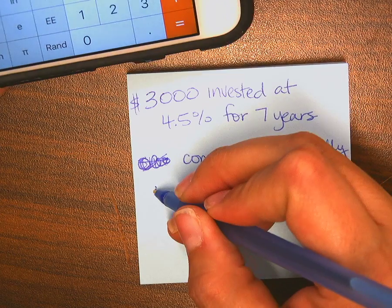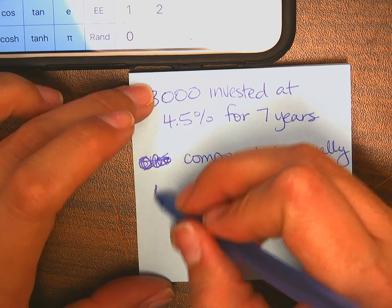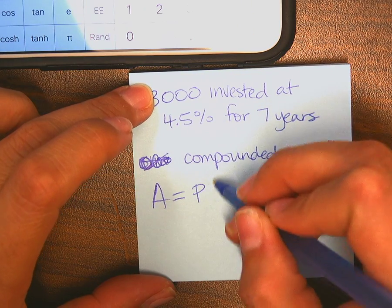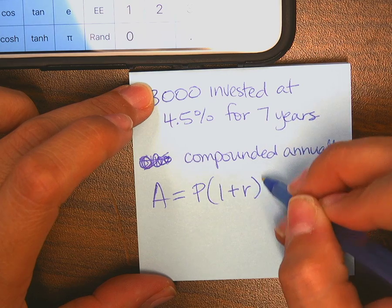Well, the first thing I always tell my kids is I've got to write down my formula and it's A equals principal 1 plus my rate to the exponent of T.